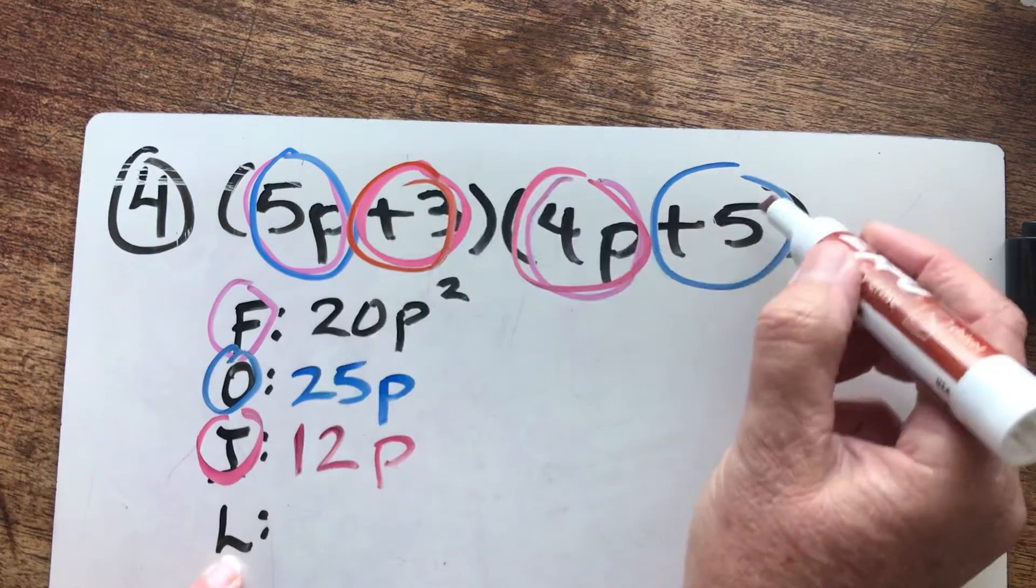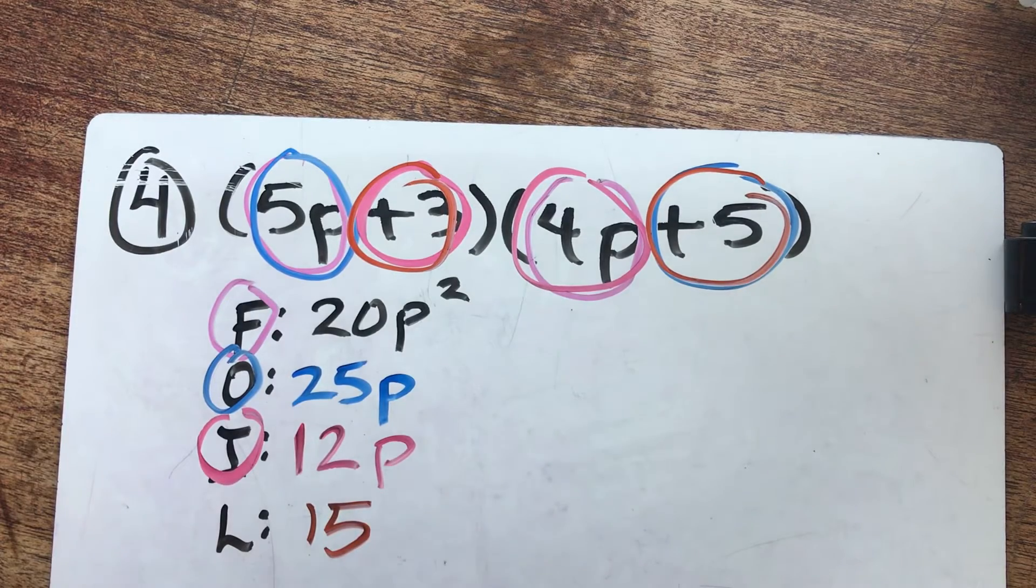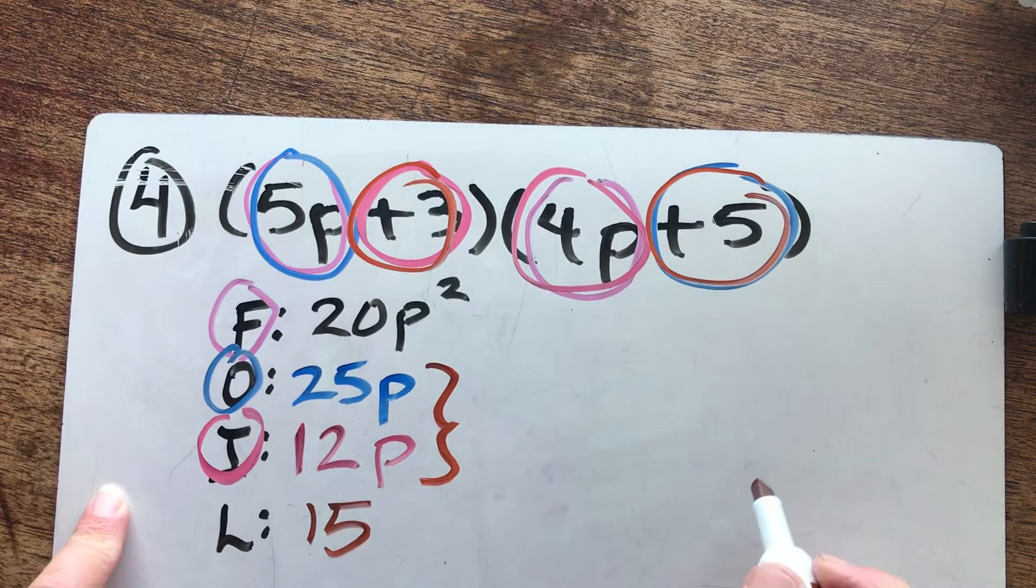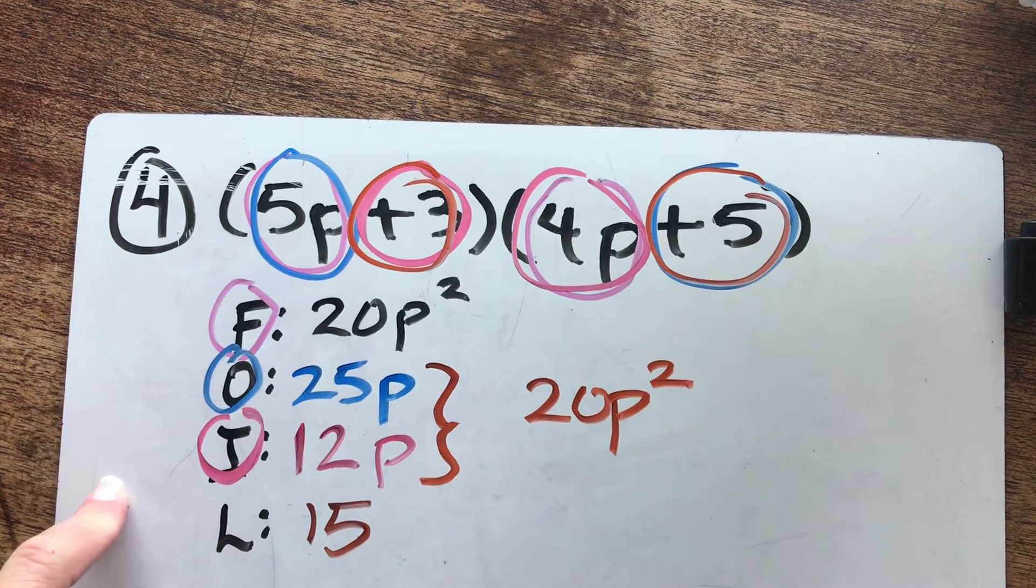And different color. Last. Three and five. Those multiply to give me 15. No P. Now I'm going to take those four terms. Each one of these is called a term. I'm going to collect like terms here.